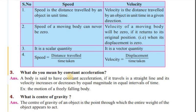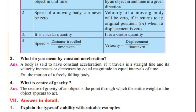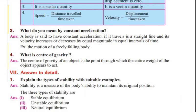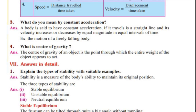What do you mean by constant acceleration? A body is said to have constant acceleration if it travels in a straight line and its velocity increases or decreases by equal magnitude in equal intervals of time. An example is the motion of a freely falling body.